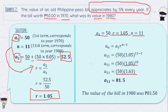The conclusion: the value of the bill in 1980 was approximately 81.50 pesos. The approximate sign is used because in real life, the 5% appreciation is not fixed every year — it depends on the economy. So the appreciation rate changes, making the result an approximation.